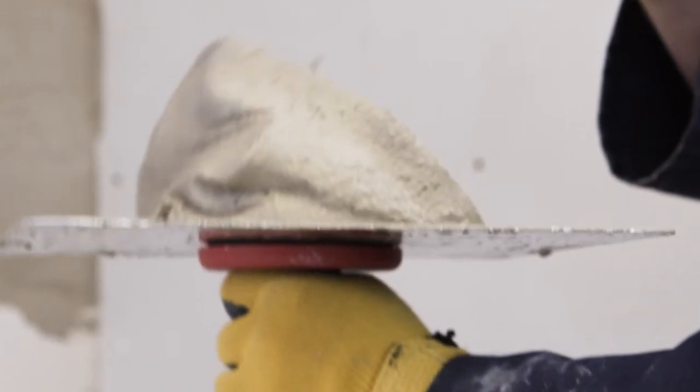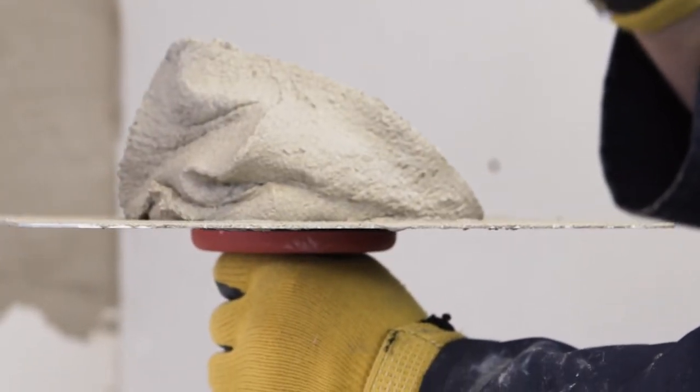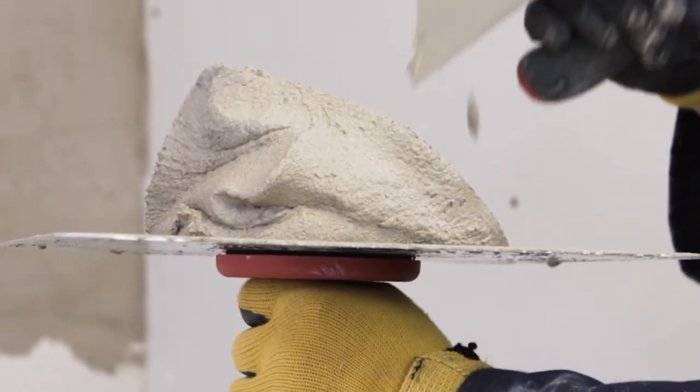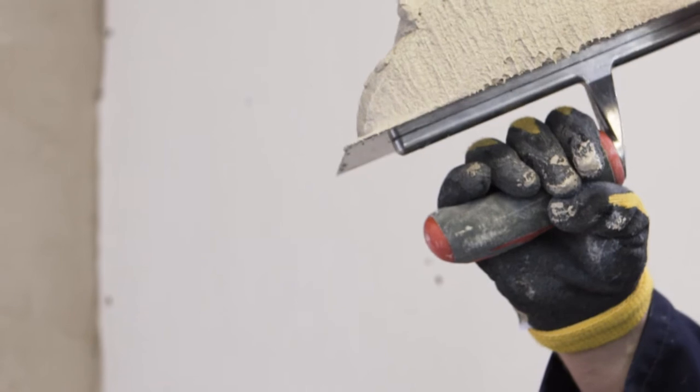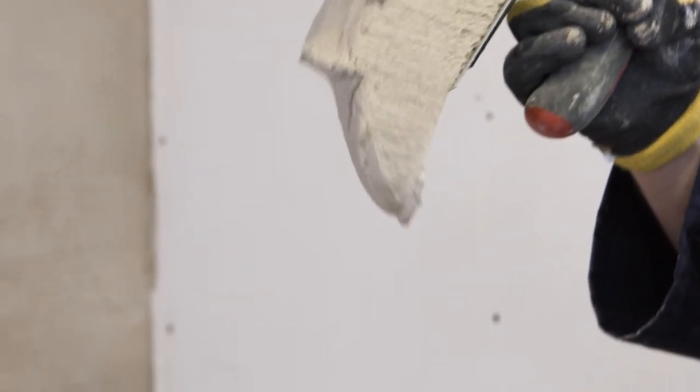The final mix should be smooth and creamy in texture. You may want to make it a little thicker for applications such as a base coat onto a brick wall, or a little thinner for applications such as a top coat onto plasterboard. It's all down to your personal preference.